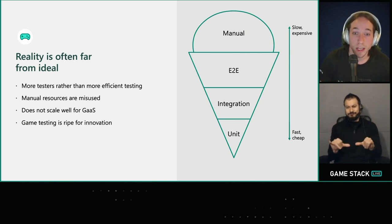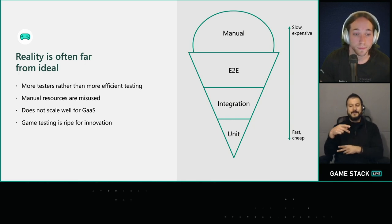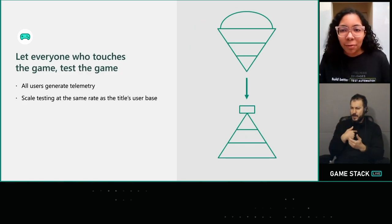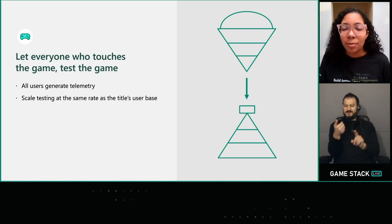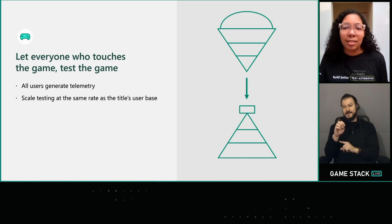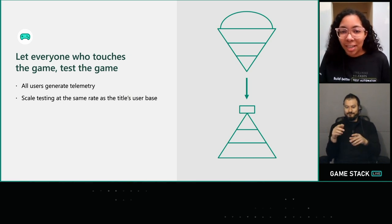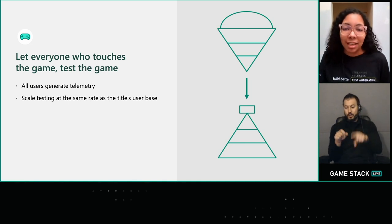Now I'll hand the reins over to Evie, who will speak to an innovative test process we call passive validation. Thanks, Tim. So how do we start to flip that pyramid back the right way? The first and most important step is to expand the coverage of our automated tests, especially those that can run passively. This is where our approach to telemetry-driven passive validation comes in. In short, these are test cases that we use telemetry to validate instead of traditional methods. Every single person who touches the game generates telemetry, and if we can make that data go to work for us, we can design test cases with unprecedented amounts of coverage, since all users have the ability to contribute, whether they even realize it or not.